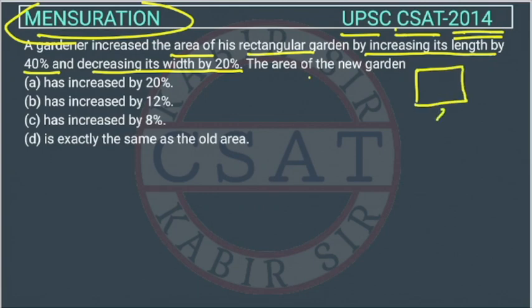Initially, this is a garden. Suppose this is L and this is B. So what is the area? Area is L into B. This is the initial area.